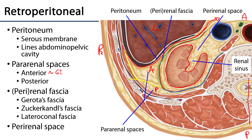Within the perirenal fascia is the perirenal space, which contains the kidneys, the suprarenal glands, the proximal ureters, and a copious amount of perirenal adipose connective tissue. This space also includes or invades the renal sinus.